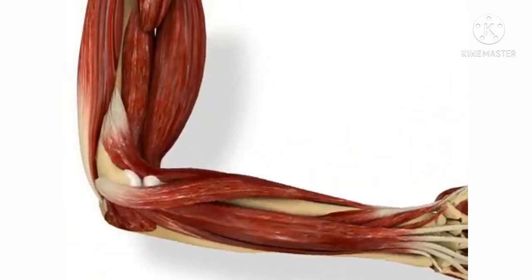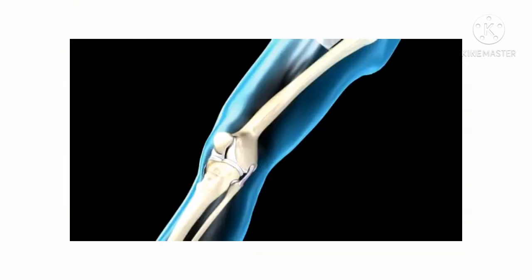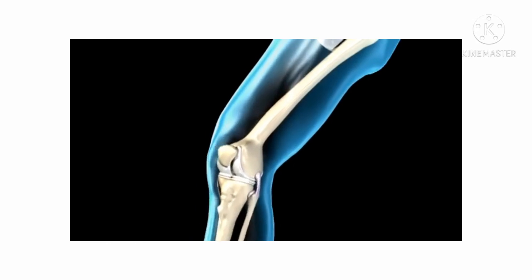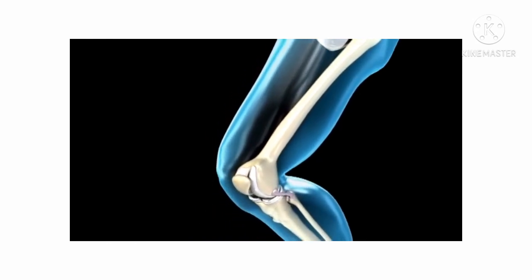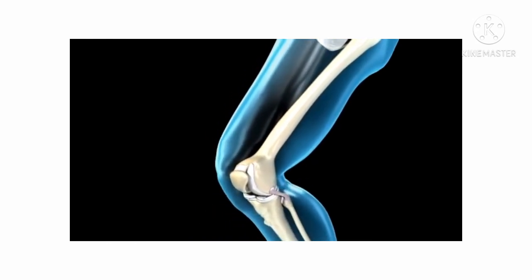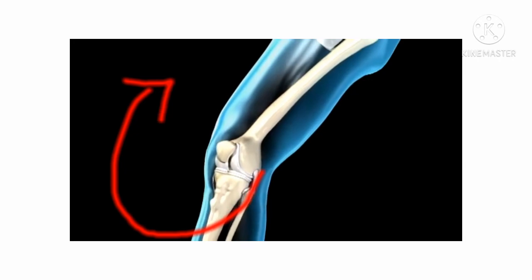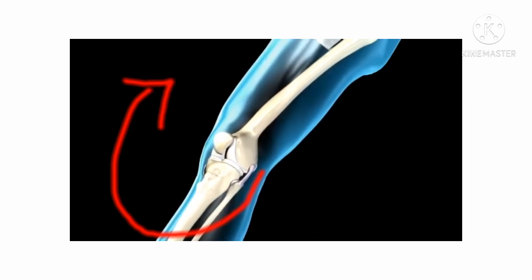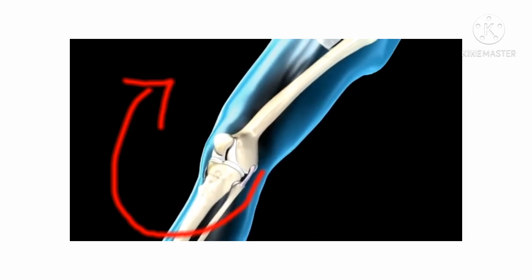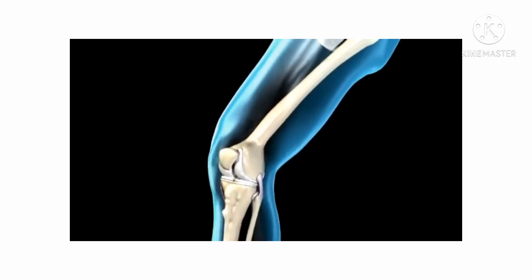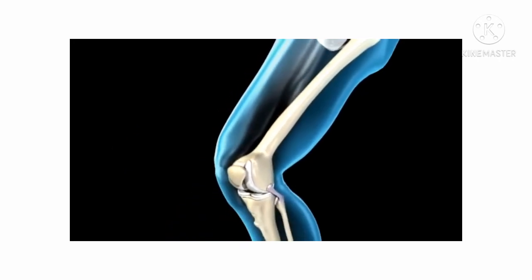Now look at the knee joint. We can bend the leg backward. Can we bend the leg in the other direction? No, because of the hinge joint present in the knee.